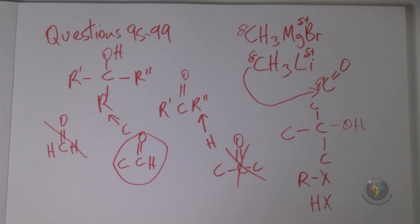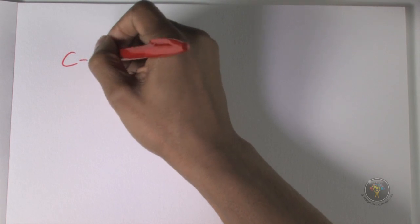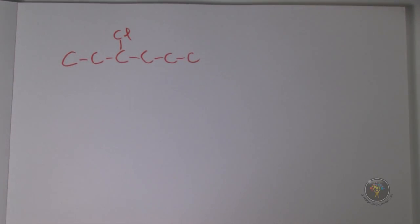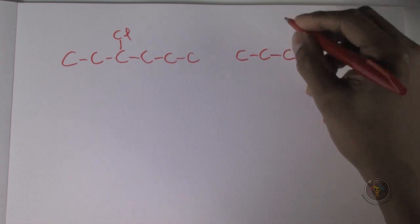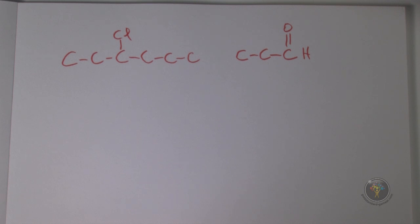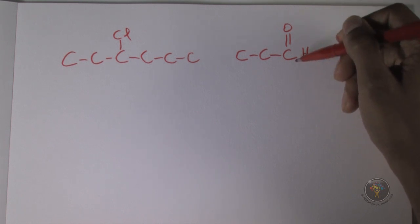Question 96: the reaction of 3-chlorohexane (carbons 1-2-3-4-5-6, chloro at position 3) with propionaldehyde (propanal — prop means 3 carbons, -al means aldehyde) under the conditions shown produces what alcohol? The key point is that R ends up attacking the carbonyl carbon because of the delta-negative/delta-positive interaction.